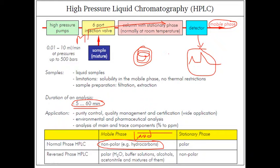What are the basic applications for HPLC? You can use it for purity control, quality management, and certification of certain products, drugs, and pesticides. You can use it in environmental and pharmaceutical analysis.